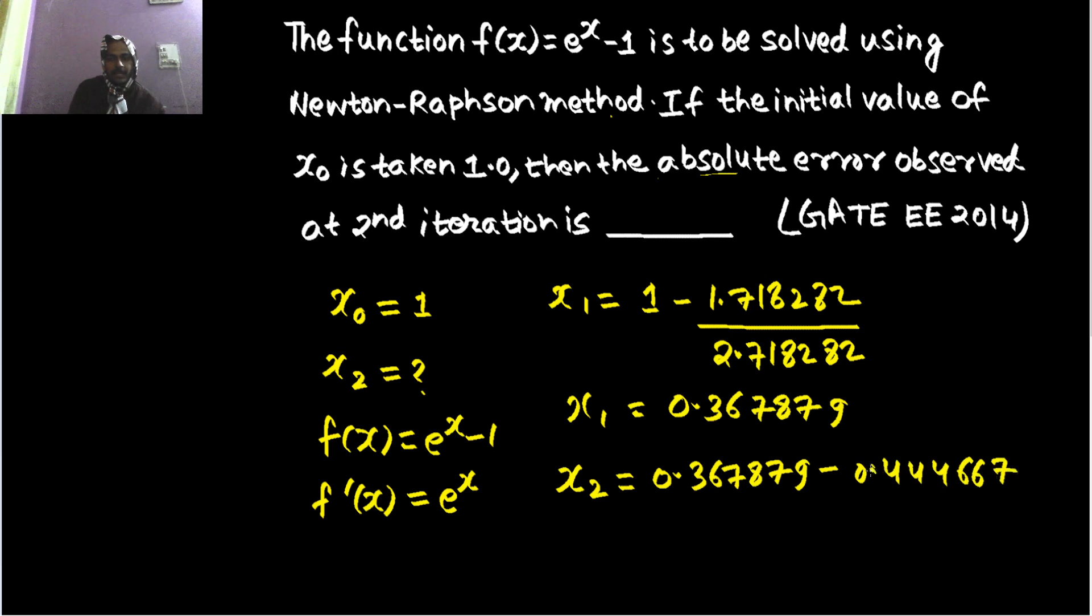0.444667, and divided by the derivative, that will be one more than this. So I am simply writing 1.444667.